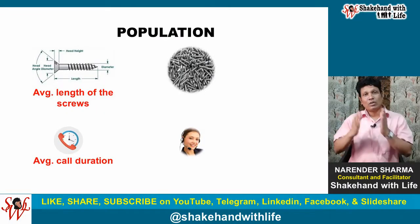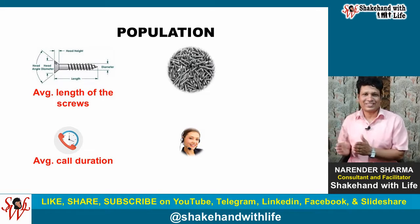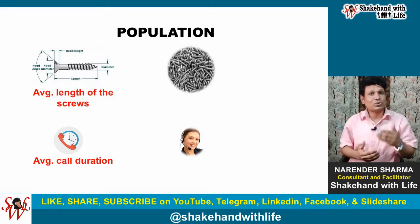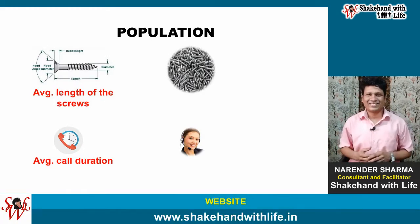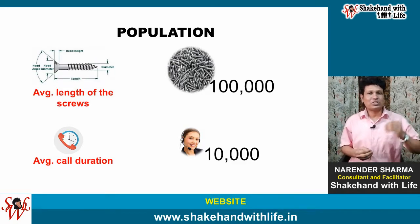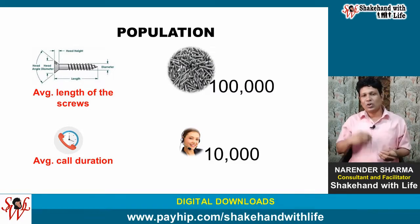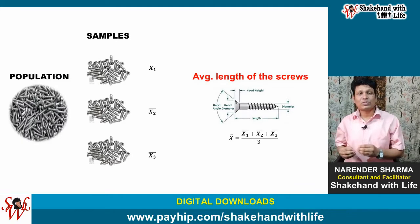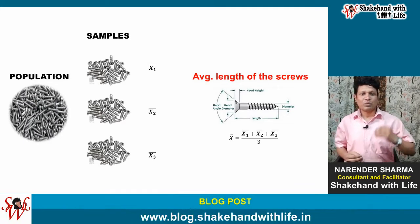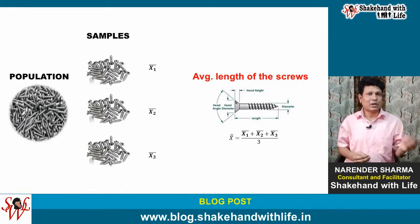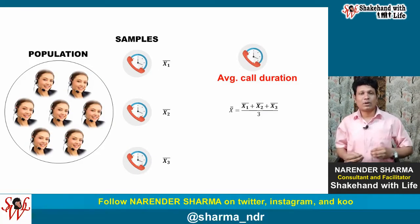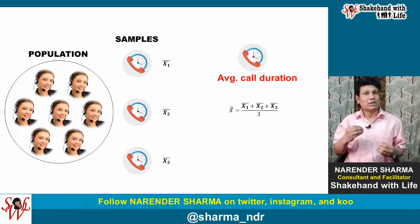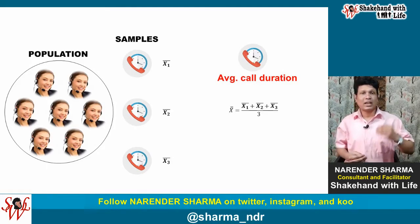Hence, the population focuses on a particular characteristic such as average length of the screws or average call duration of the calls, and the number of units possessing this characteristic constitutes the population — like 100,000 screws or 10,000 calls. To get the average length of screws produced in an hour, we take random samples of screws at different points of time in that hour. Similarly, to get the average call duration, we take random samples of calls at different points of time in that hour.